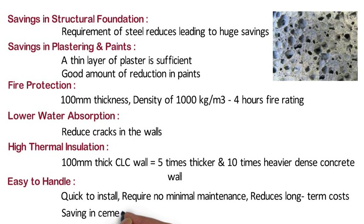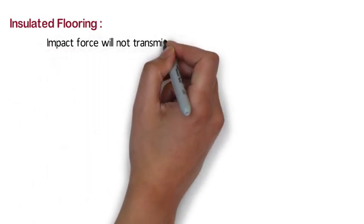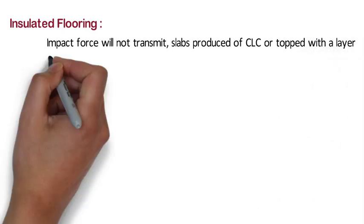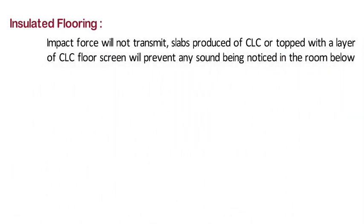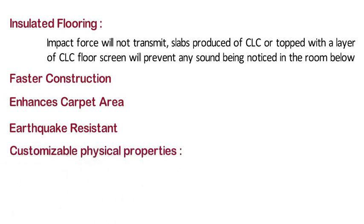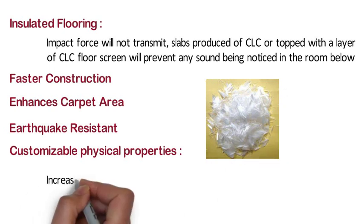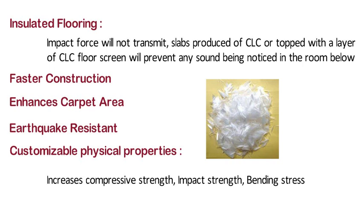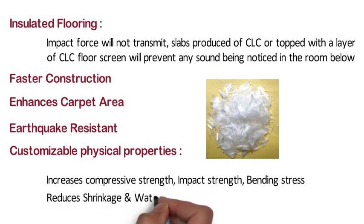Foam concrete blocks offer savings in cement, sand, water, labor, energy and time. Insulated flooring: as the impact force will not transmit, slabs produced of CLC or topped with a layer of CLC floor screed will prevent any sound being noticed in the room below. Faster construction: due to thin layer of plaster, the carpet area can be increased. Earthquake resistant: CLC blocks are excellent for earthquake resistant housing due to their lightweight characteristics. Customizable physical properties: adding polypropylene fiber to CLC increases compressive strength, impact strength, bending stress and reduces shrinkage and water absorption.